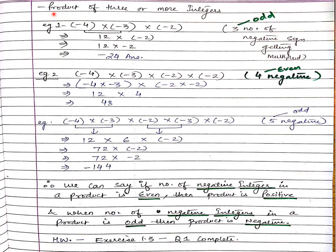In the last examples we saw the product of 2 numbers at a time. Now let's see 3 or more integers at a time to generalize. First example: I have taken 3 integers, all of them negative — minus 4 into minus 3 into minus 2. If you observe, there are 3 negative signs, which is an odd number. Let me take the first two: minus 4 into minus 3. Two negatives become positive, so 4 times 3 is 12, positive. Then 12 into minus 2: 12 times 2 is 24. One is positive and one is negative, so the answer is negative 24. So when we have an odd number of negative signs, the answer is also negative.